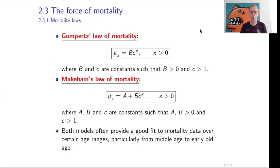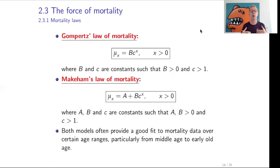Now let us look at some particular laws of mortality. We consider two important laws: the law of Gompertz and the law of Makeham. In Gompertz's law, the force of mortality at age x is b multiplied by c to the power x, where b is non-negative and c is greater than 1. This means the force of mortality is an exponentially increasing function of x. Intuitively, mu_x is the probability of immediately dying given survival to age x, and this probability grows exponentially with age — which is quite intuitive.